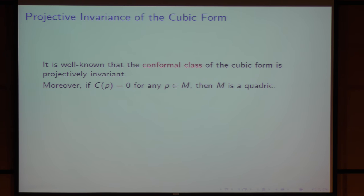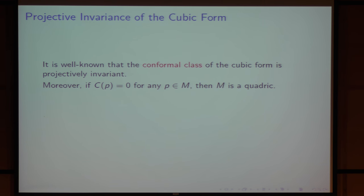The conformal class of the cubic form is projectively invariant. This is well known. Also well known is that if C equals zero at all points, then M must be a quadric.